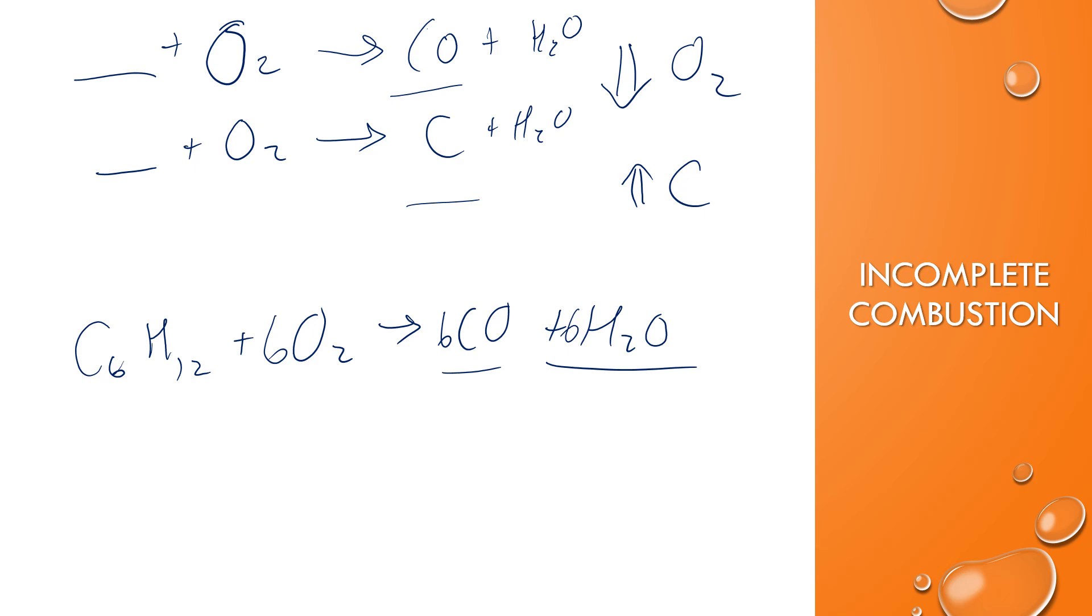Now, let me compare that really quick to complete combustion. If it's complete combustion, it would be CO2 being formed instead. And you would still need six carbon dioxide molecules because of the six carbons. And you would need six water molecules being formed. But now I have 18 oxygen atoms, so this would be nine oxygen molecules required. So you can see how you need more oxygen for complete combustion, which is why in limited oxygen environments, you're going to produce carbon monoxide or even just carbon.